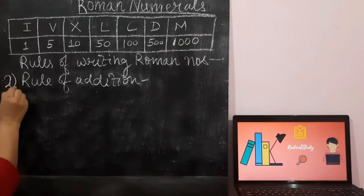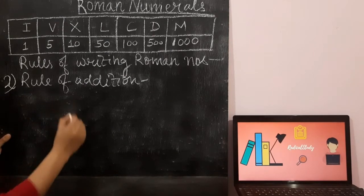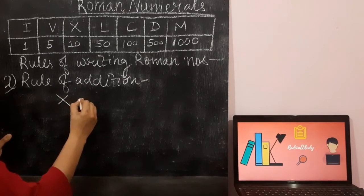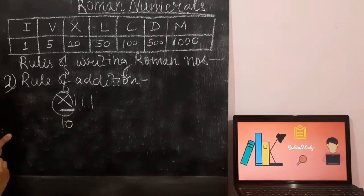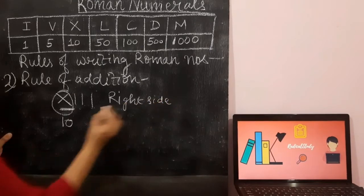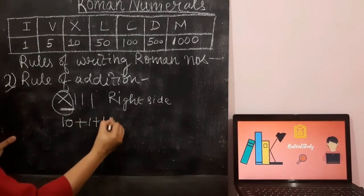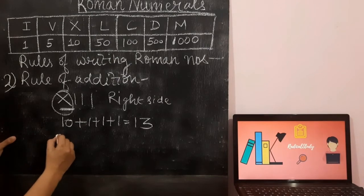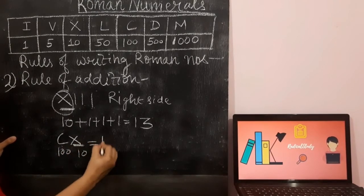Now I will explain the second rule, which is the rule of addition. In the rule of addition, whenever a Roman numeral which is smaller is written on the right side of a greater one, then we add. For example, XIII: X represents 10 and the three I's are written on the right side, so we add 10 plus 1 plus 1 plus 1, which is 13. Similarly, CX represents 100 plus 10, which is 110.